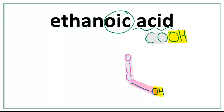Now, we need to draw our parent chain. Eth right here tells us that there are two carbons in the longest carbon chain. This N right here tells us that this is an alkane, meaning that we only have single bonds between the carbons.